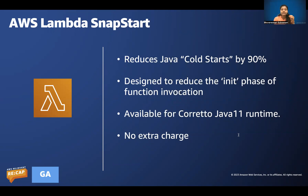In many cases, execution of a Lambda function takes milliseconds to begin. In other cases, the init phase takes a little longer due to various reasons — especially in Java runtimes — which we call a cold start. The AWS Lambda SnapStart feature is designed to prevent cold starts. Currently, this feature is available for Lambda functions developed using Java 11 runtime.